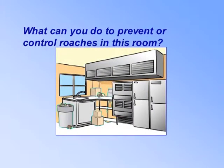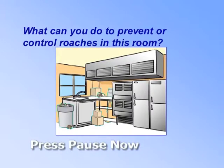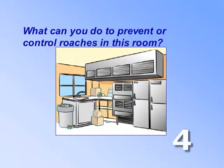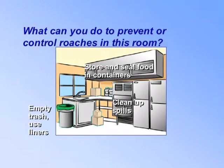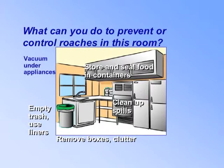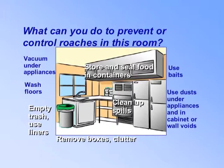What can you do to prevent or control roaches in this room? Store and seal food in containers. Clean up spills. Empty the trash and use liners. Remove boxes and clutter. Keep areas clean by vacuuming under appliances and washing floors. Use baits where necessary. Use dusts under appliances and in cabinet or wall voids.